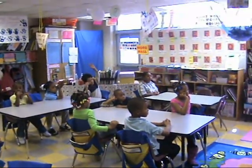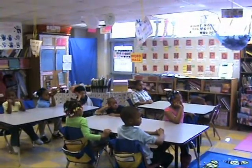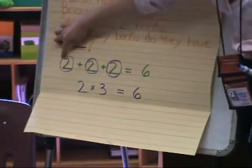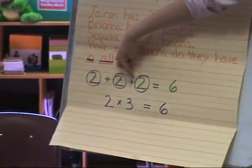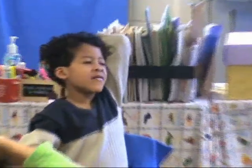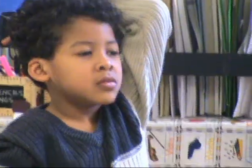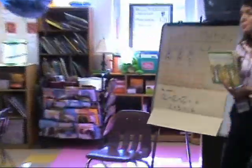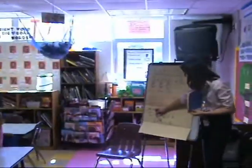Let's take a look. We have two plus two plus two equals six. I circled the two, circled the two, and circled the two. How many groups of books do I have? You have three groups — very good. How much is in each group, Sequoia? Two. There's two in each group. So my problem is two times three equals six.